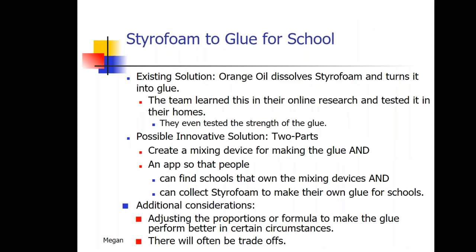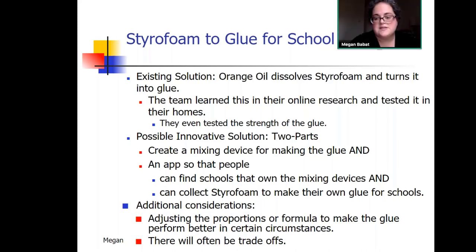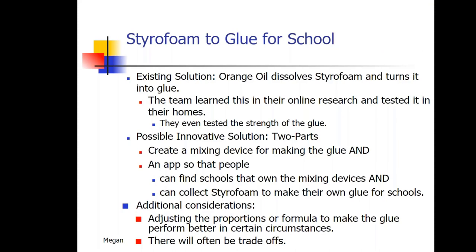An example: some kids discovered an existing solution for dissolving styrofoam and turning it into glue, and they had different ideas about how to improve on that solution. This is a good illustration of the process — from identifying a problem to figuring out how to approach a solution and finding various ways it could go. It really is about the kids doing that work, not the very enthusiastic and eager adults who are there to support them.